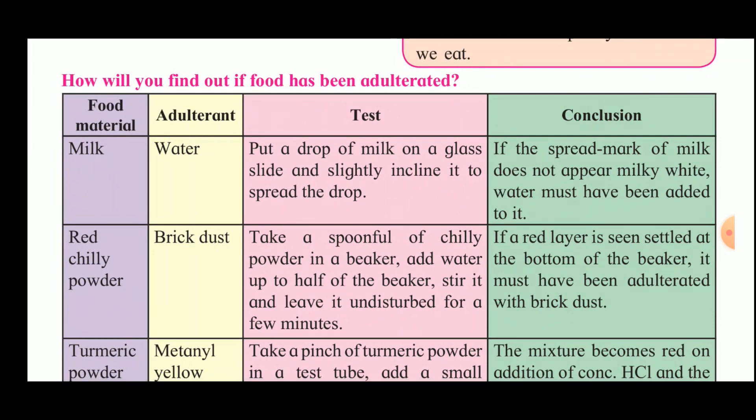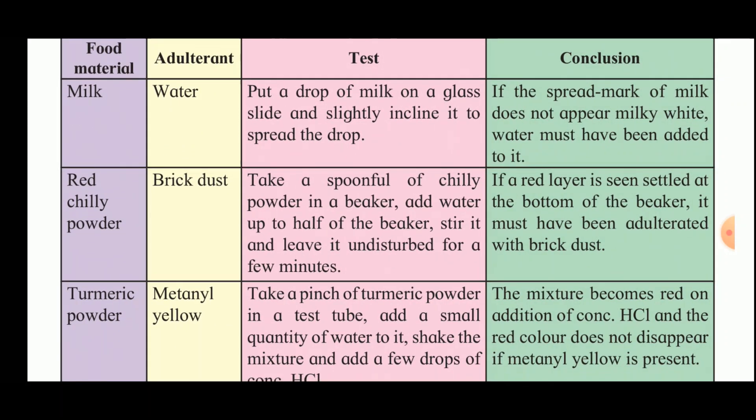How can you find out if food has been adulterated? For milk, water is commonly added. Put a drop of milk on a glass slide and slightly incline it to spread the drop — if the spread mark does not appear milky white, water has been added. For red chilli powder, take a spoonful in a beaker, add water to half the beaker, stir, and leave undisturbed for a few minutes. If a red layer settles at the bottom, brick dust has been added.